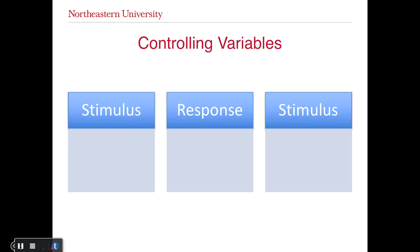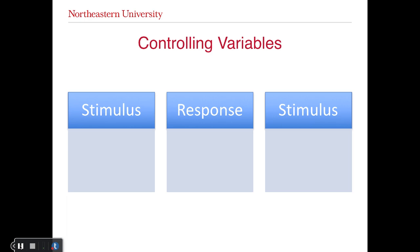We have a typical three-term contingency — stimulus, response, stimulus — which could also be categorized as antecedent, behavior, consequence. We are going to list all antecedent arrangements, thinking back to week eight where we talked about antecedents, including all antecedent variables in that first stimulus block in order to bring the operants together and make them easily comparable. So let's start with the mand.